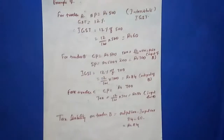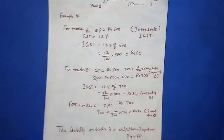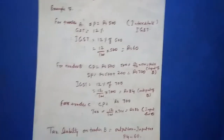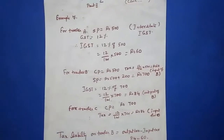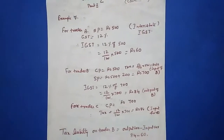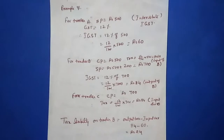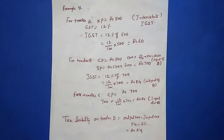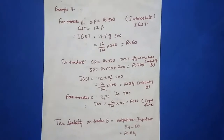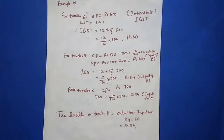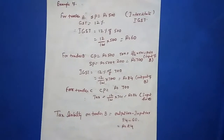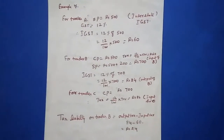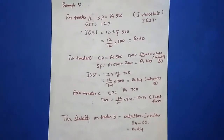For Trader A, selling price is rupees 500 and GST is 12%. It is interstate, so you have to calculate IGST. IGST is full 12%. Calculate 12% of 500: 12 by 100 into 500 = 60 rupees. For Trader B, the selling price of A becomes the cost price of Trader B, therefore CP is equal to 500 rupees.